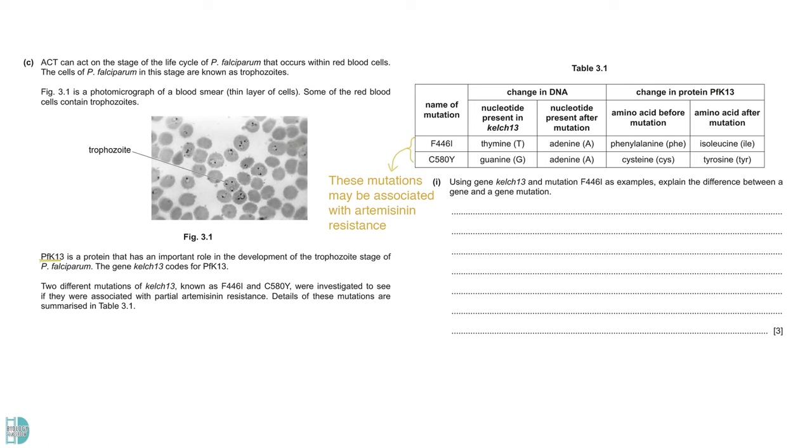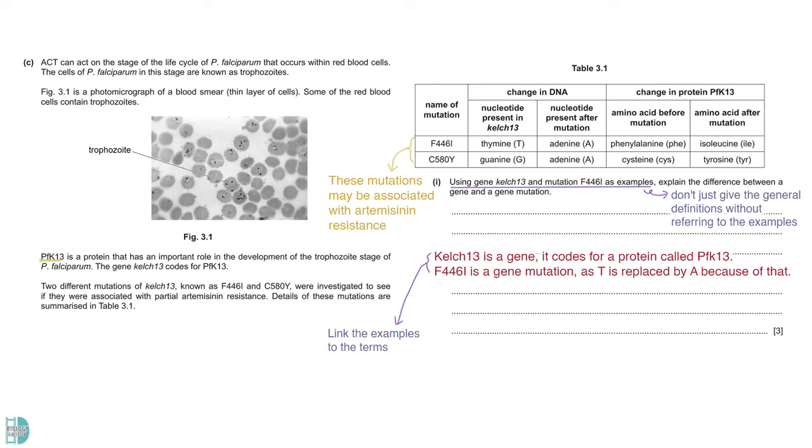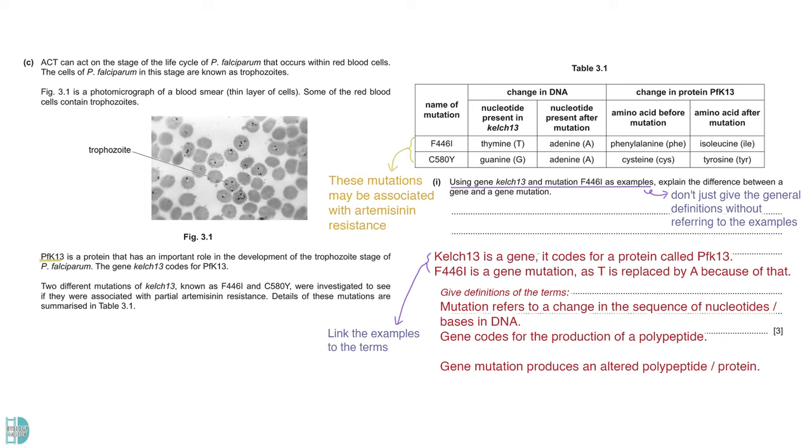Question 1. Using gene KELCH13 and mutation F446I as examples, explain the difference between a gene and a gene mutation. Since the question wants you to use these two examples, it is important that you don't just give the general definitions of these two terms without referring to the examples. First of all, link the both of them to the term. KELCH13 is a gene, since it codes for a protein called PFK13. F446I is a gene mutation, as T is replaced by A. Then, provide the definitions for both of them. Mutation means that there is an altered sequence of nucleotides or bases in DNA. Gene codes for the production of a polypeptide. You can also get the third mark if you mention that gene mutation produces an altered polypeptide or protein.